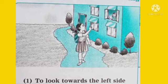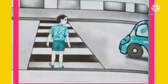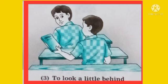In the second picture, the boy before walking on the zebra crossing looks to his right side to check whether any vehicles are coming. In the third picture, the boy is calling the front boy to give him the book, so the front boy is turning a little behind to take the book — he is looking behind.